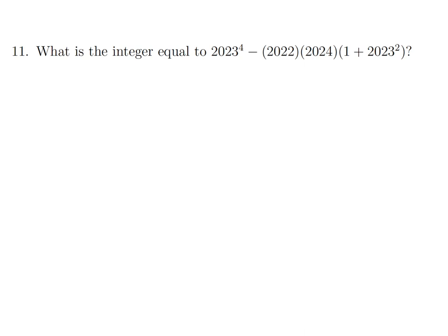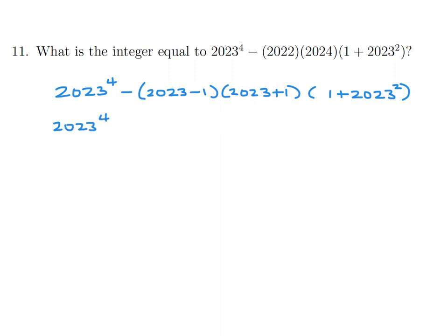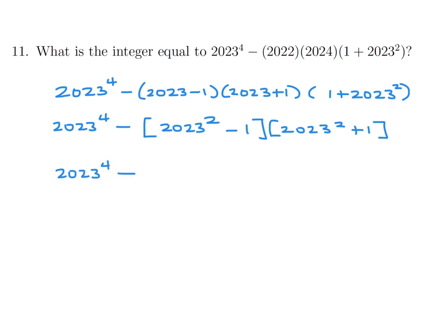What integer equals the square root of (2023 times 2024 times 2022 plus 1 plus 2023 squared)? Rewriting: 2022 equals 2023 minus 1 and 2024 equals 2023 plus 1. Substituting and simplifying: (2023 squared minus 1)(1 plus 2023 squared) which becomes 2023 to the fourth minus 1, then adding 1 gives 2023 to the fourth, and the square root is 2023 squared, which equals 1.